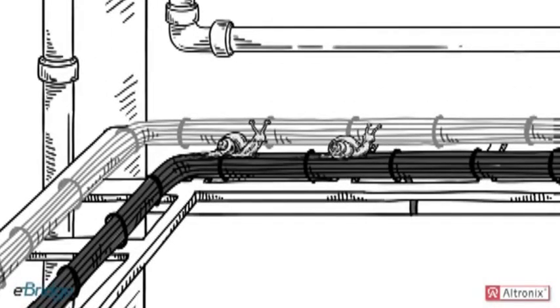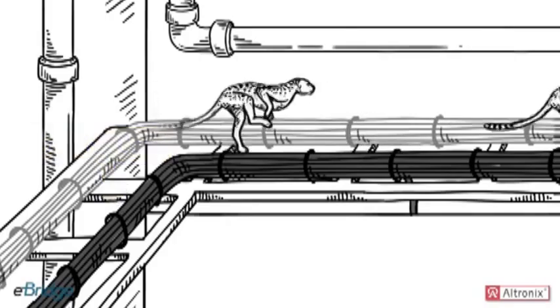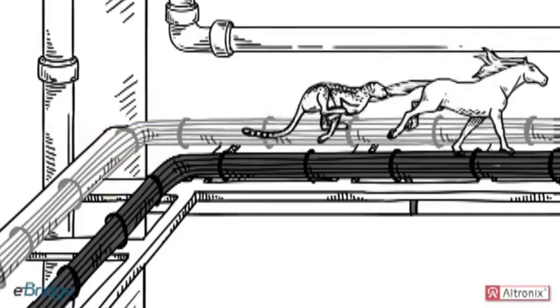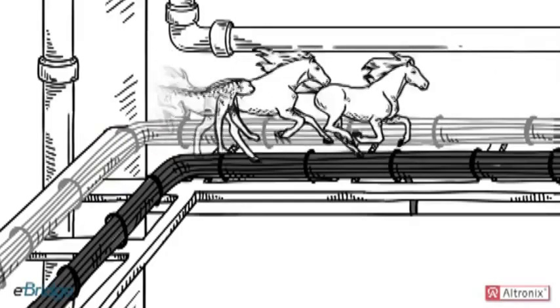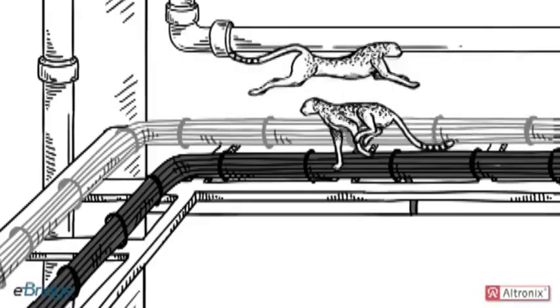You see, eBridge lets you use existing coax cable to transmit IP data by itself or simultaneously along with PoE, PoE plus, even high PoE at data rates up to 100 megabits per second full duplex.